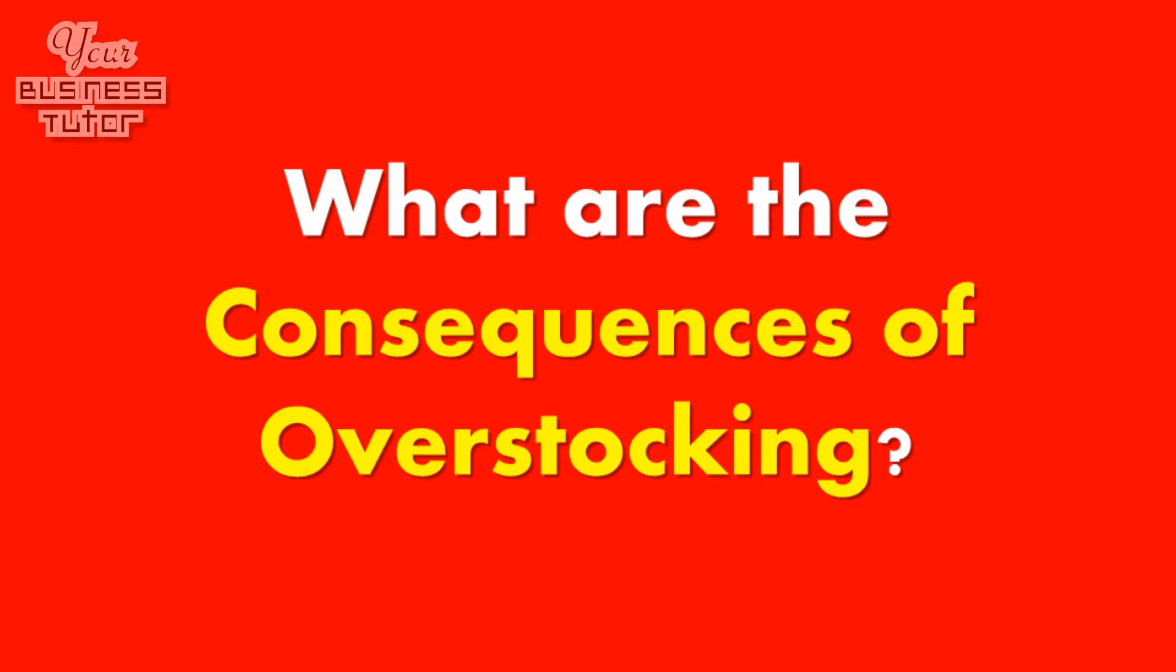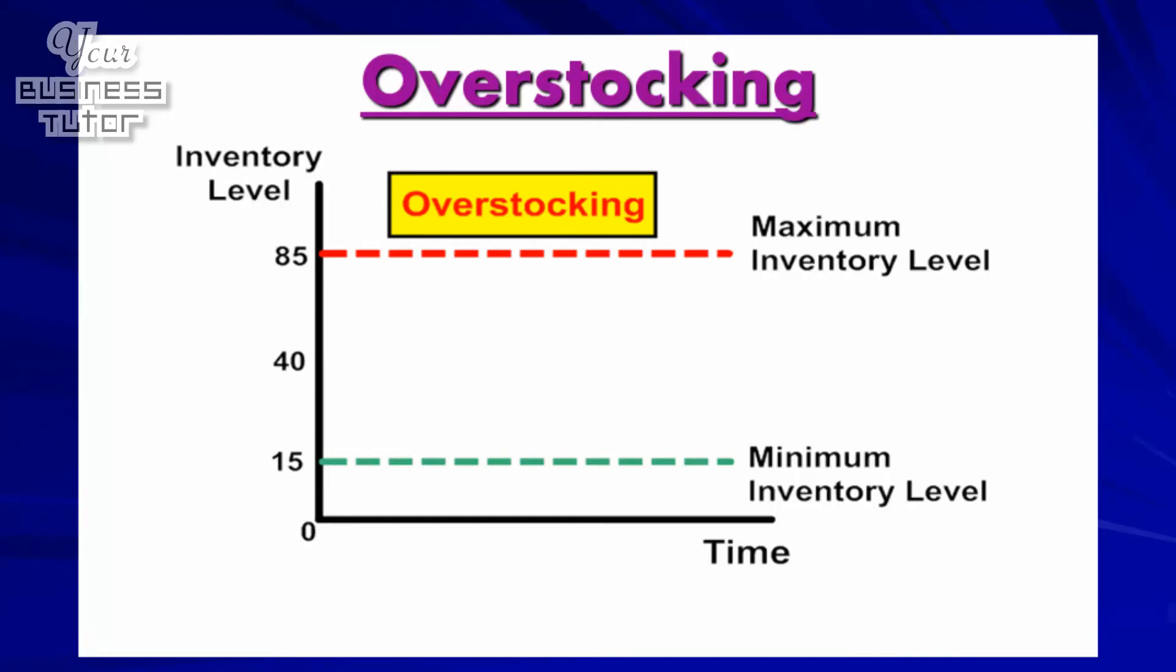Okay, let's now move on to look at what happens when a business's inventory control goes wrong and stock levels rise above the maximum or fall below the minimum by initially asking: what are the consequences of overstocking? Overstocking occurs when a business's inventory level is above the maximum point. For example, in the diagram shown, any inventory level above the maximum of 85 would be classified as overstocking.